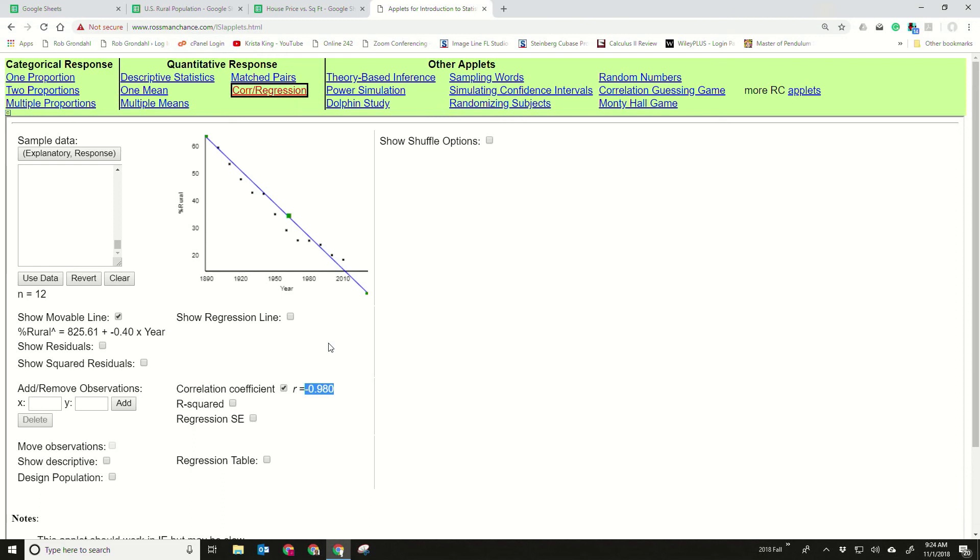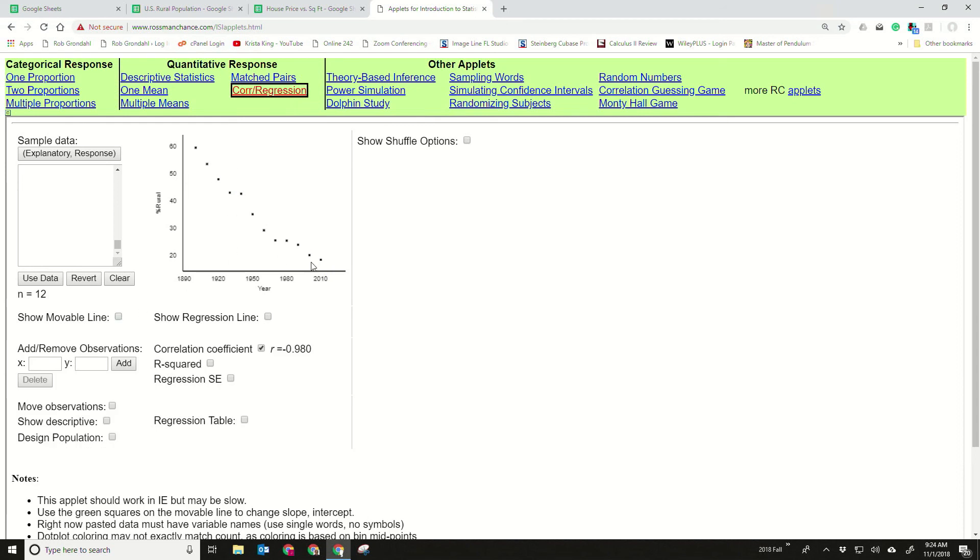So your first step in analyzing this data is to make the scatter plot. From there, we could calculate the correlation coefficient. And then next, we want to look at how do you test that coefficient—how do you determine whether that's significant or not? Data could be somewhat linear just randomly, and we want to see how likely that is.